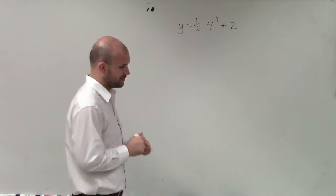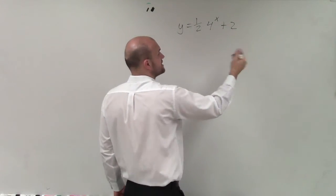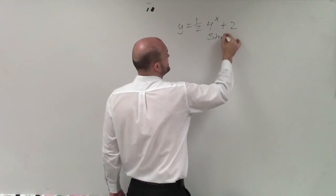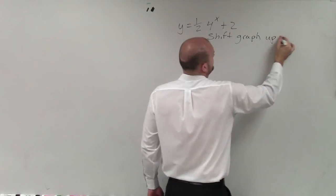But before I get to graphing the parent graph, we need to understand what transformation do we have here. And since I'm adding a 2 outside the function, I know I'm going to be shifting my graph up 2 units.